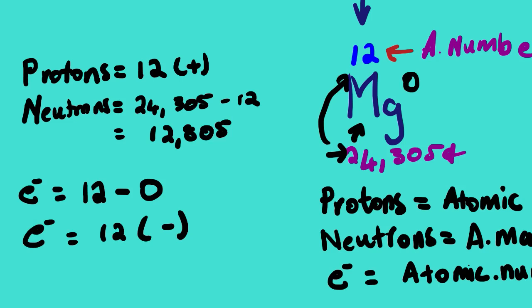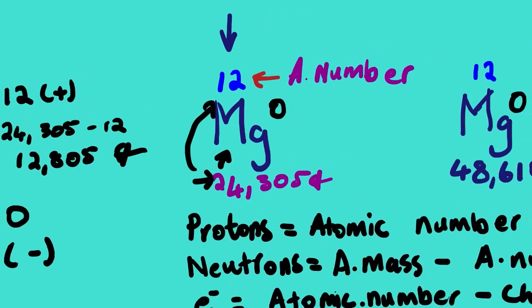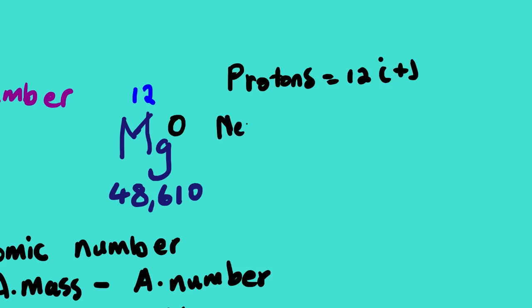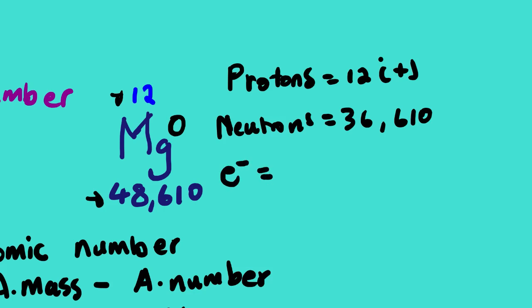Now you can see how we calculate the number of neutrons. Let us look at another example. Protons = 12. For neutrons, we take the bigger number minus the atomic number using our equation — if you forget it, just remember we take the bigger number minus the smaller. We have 36.610 minus 12 for neutrons. And since there is no charge, electrons = 12 minus 0 = 12.